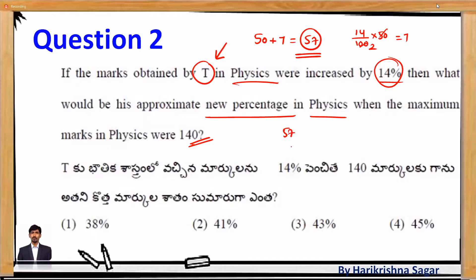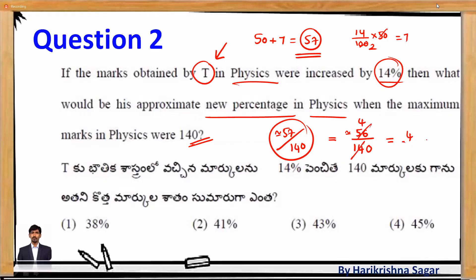Now we need 57 out of 140 as a percentage. For simplification, since they ask for an approximate value, take 56 instead of 57. Then 56/140 = 4/10 = 40%. Since we approximated 57 as 56, the actual value will be slightly more than 40% — approximately 41%. The answer is option 2.